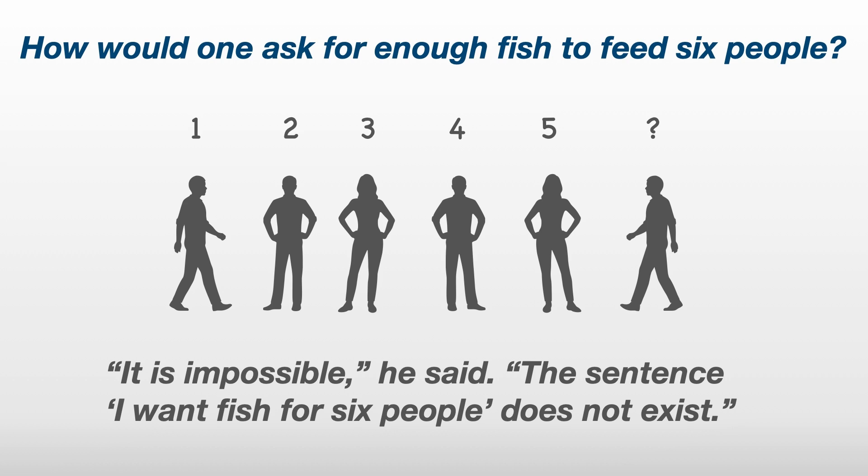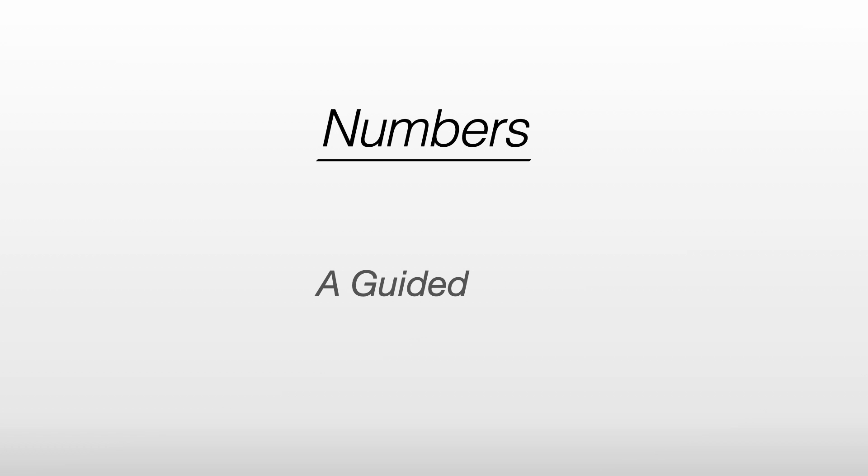The sentence, I want fish for six people, doesn't exist. I tell this story because it illustrates that numbers are a tool we've created or discovered in order to do things. Our system of numbers has evolved over many centuries to become what it is today, and in this video, we'll take a look at that system.